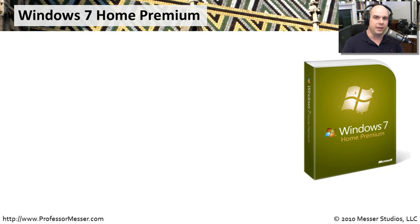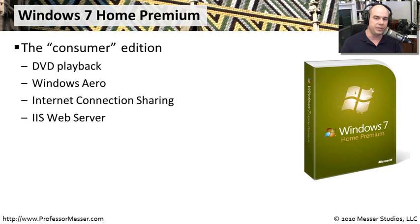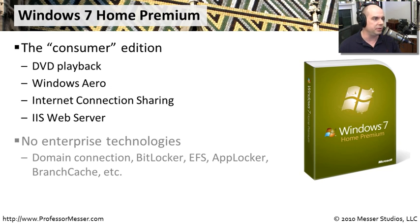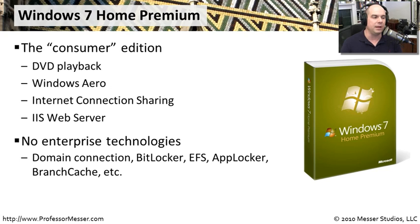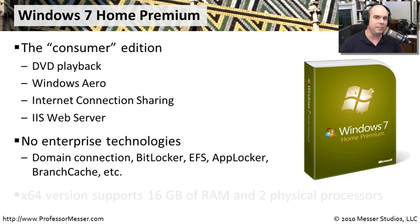If you bought a new computer from a retailer for your home or home office, it probably has Windows 7 Home Premium — the version most consumers get. It has DVD playback, Windows Aero, internet connection sharing, and IIS web server, which are useful in a prosumer environment. However, it's not designed for the enterprise: no BitLocker, no encrypting file services, no AppLocker or BranchCache, and you cannot connect it to a Windows domain. If your organization has an Active Directory domain, this version won't be able to join it, so it's probably not the right choice for a business environment.